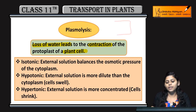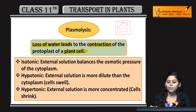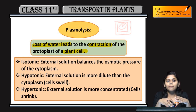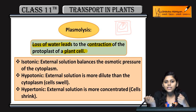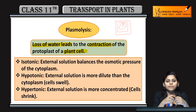Plant cell mein protoplast hota hai. Sabse zhaadha water protoplast of the plant cell mein hota hai. Jab wahan pe paani ki kami ho jayegi, jab paani wahan se nikal jayega, toh yeh protoplast shrink kar jata hai.